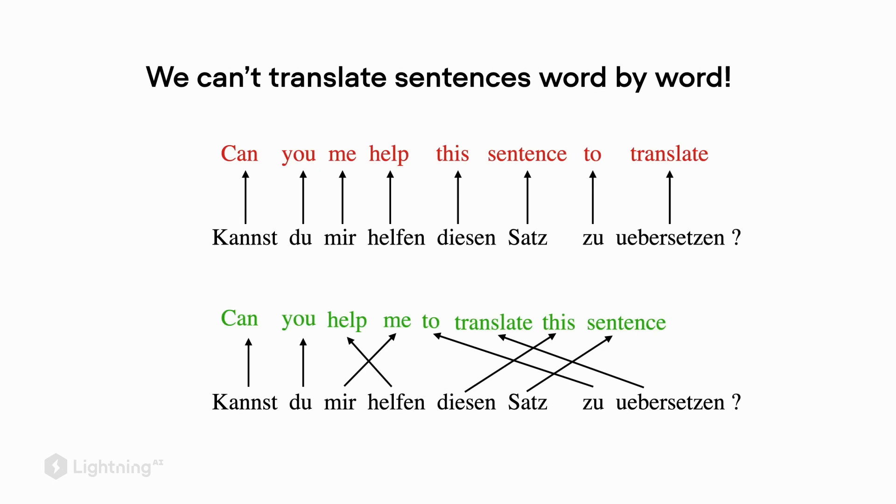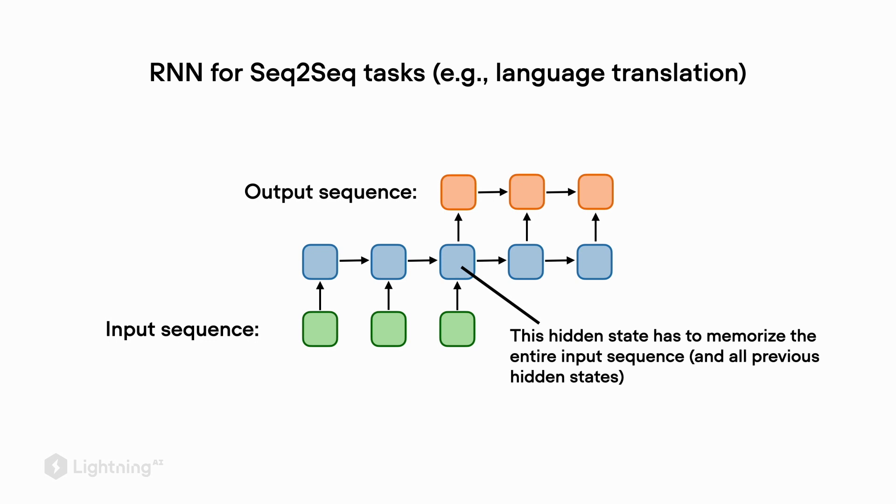In this video, we are going to learn how the attention mechanism works for RNNs and how this relates to the transformer architecture. Previously we saw that we can't simply translate a sentence word by word because the grammar structure could be lost. This is why for RNNs we use this many-to-many sequence-to-sequence approach where we have delayed output.